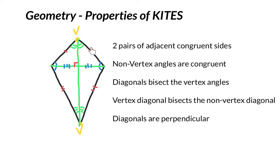Where they meet is a vertex angle, and where these two meet is a vertex angle. The non-vertex angles are congruent, so this angle and this angle. The diagonals bisect the vertex, so our diagonal here from vertex to vertex cuts the angles into equal angles.